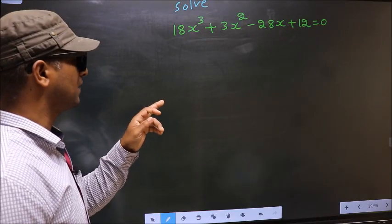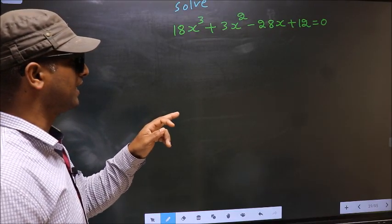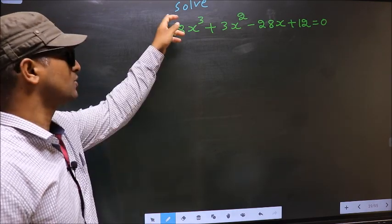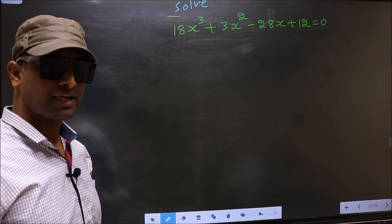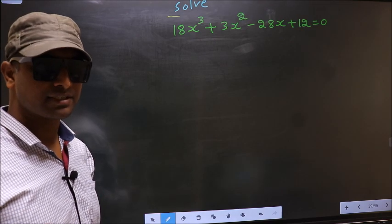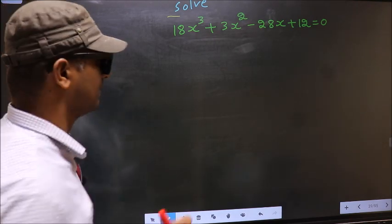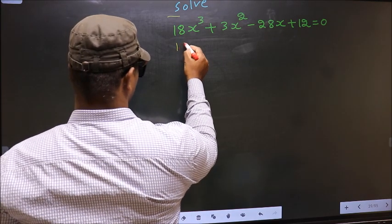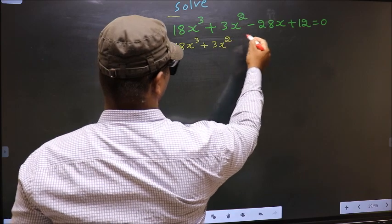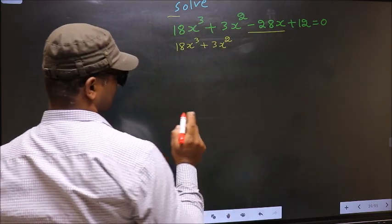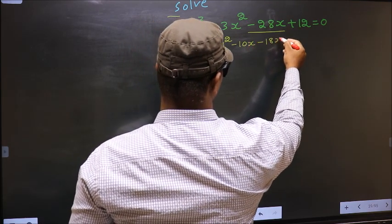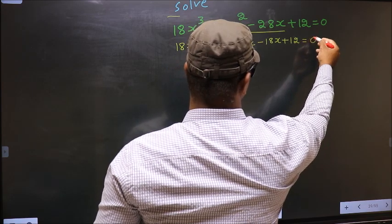Solve 18x³ + 3x² - 28x + 12 = 0. To get the values of x, we have to change the x term. In place of -28x, I write -10x - 18x. So the equation becomes 18x³ + 3x² - 10x - 18x + 12 = 0.